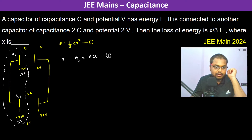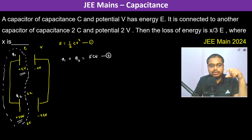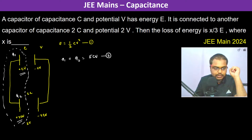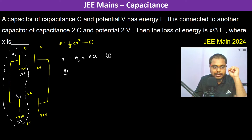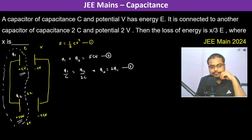The inner plates are isolated and cannot exchange charge with the outer plates, so charge redistributes only among themselves. The second condition is that the potential difference is the same, so q1 by C should equal q2 by 2C, therefore q2 equals 2q1.